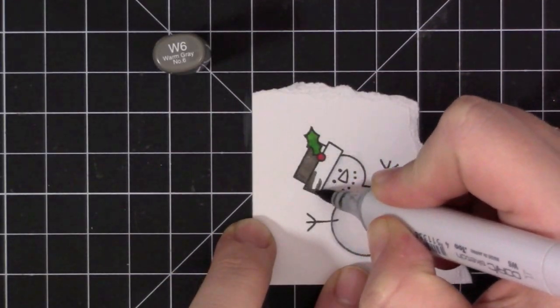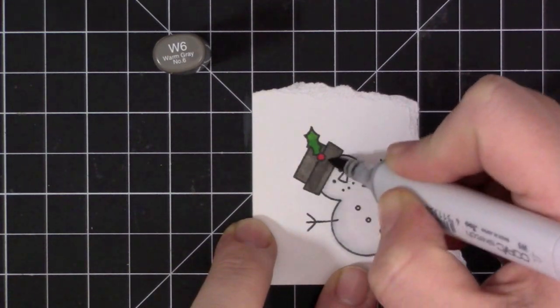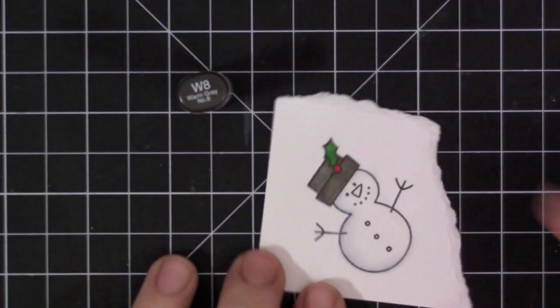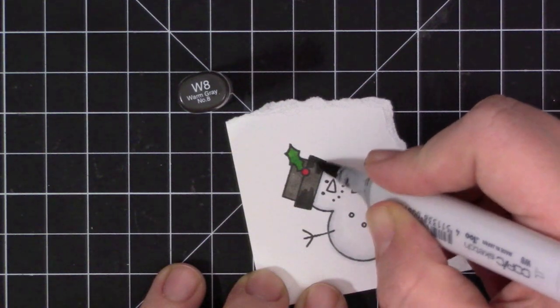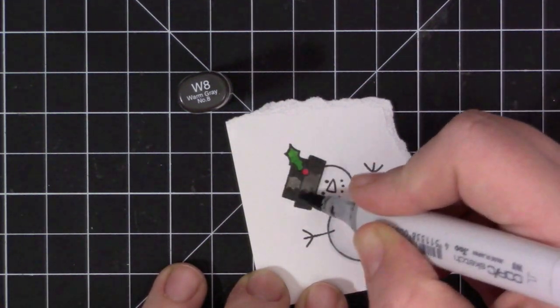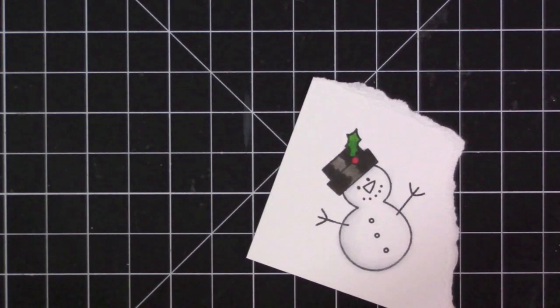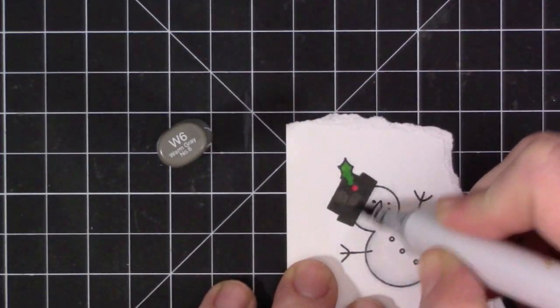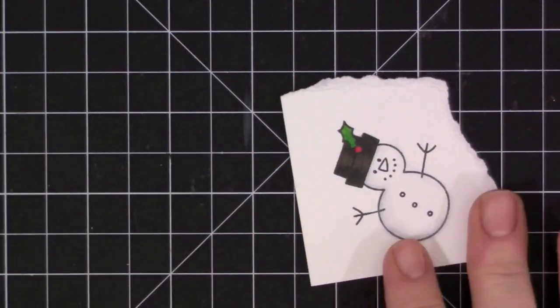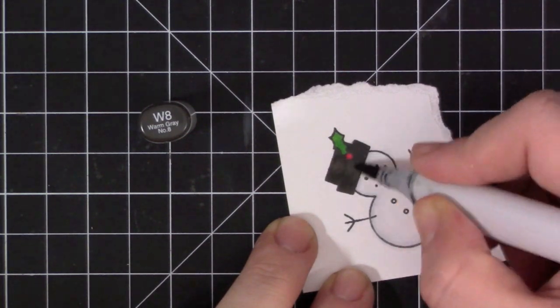And then to finish him off, I'm going to go ahead and do the hat area. So I just colored the holly with a green Copic marker and then the little berry with red. And I'm using some warm grays here to go ahead and color his hat in. And I'm kind of focusing the darker color onto the outside edges of the hat just to kind of give it a highlight in the center area.